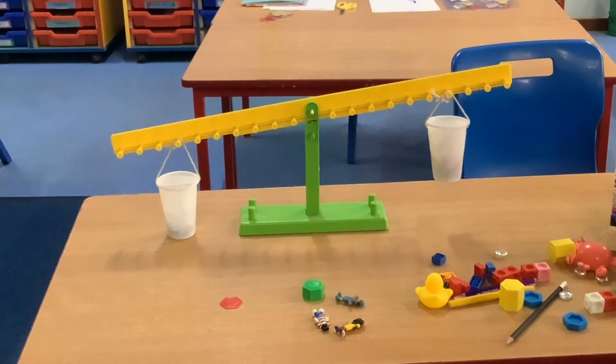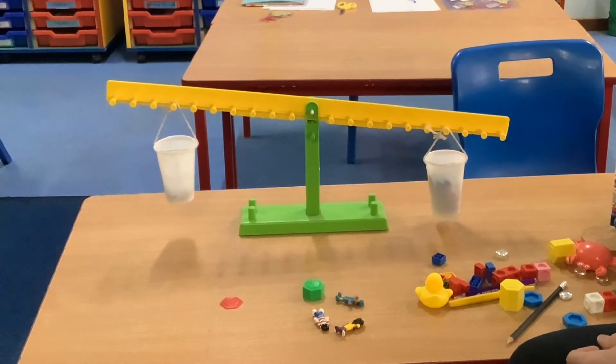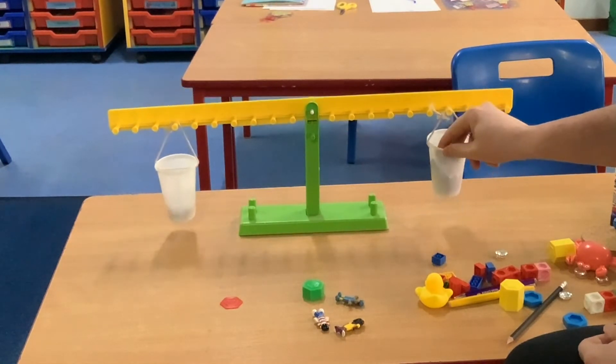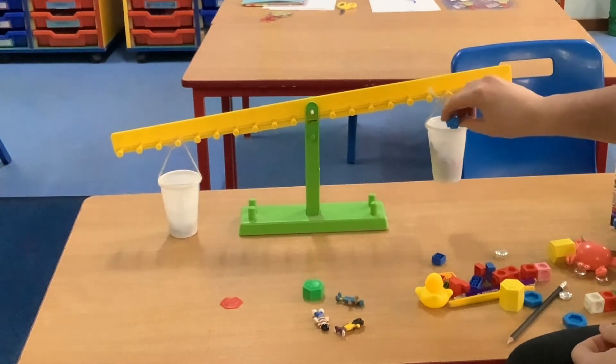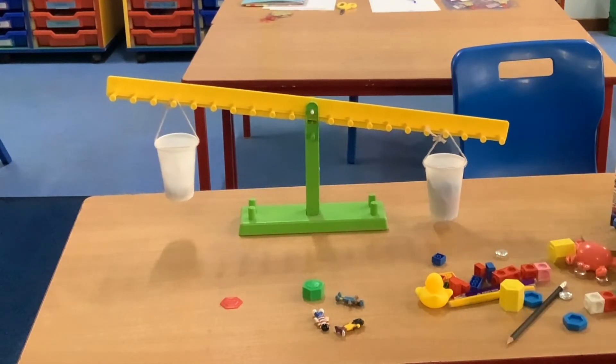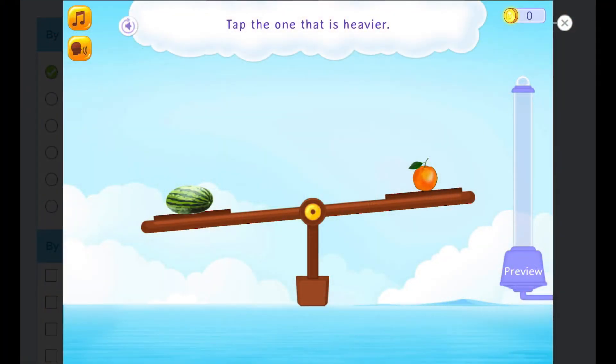Shall we see how many aliens we would need to make it the same weight as the marbles? We've got eight, nine, ten. It's starting to lift off. Eleven. Oh, so eleven is a bit too heavy. Let's try ten. That's not quite. Let's try eleven again. So it's between ten and eleven aliens is the same as ten marbles.